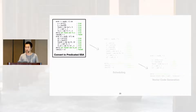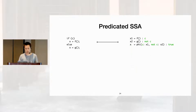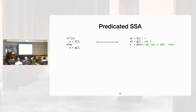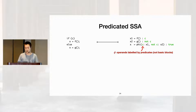I'll explain how predicated SSA works. Suppose you have a C program — we represent it with instructions that have no branches or basic blocks, just predicates which indicate for each instruction whether we want to execute it or skip it entirely. To represent forward control flow joins, we use V nodes, where the operands are labeled by the conditions under which values should be selected. This is similar to a previous IR called gated SSA.